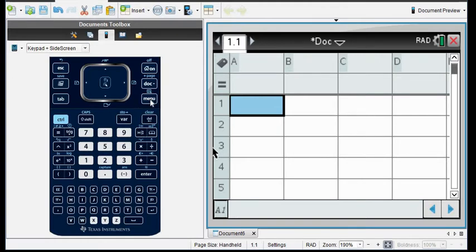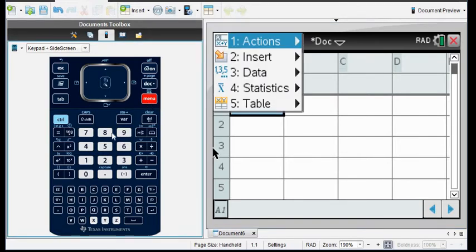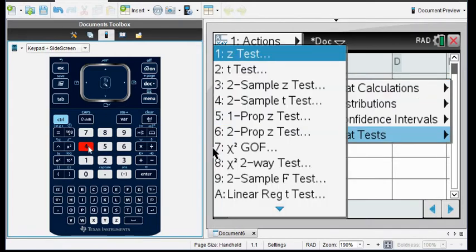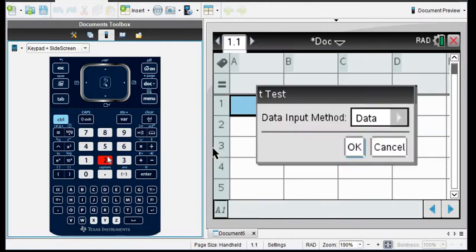if you have all of the data to put in a list, you could put it in here directly and then run the test. But in this case, we do not have all of the data. We have the stats. So I'm going to hit menu, option 4. And then I'm going to choose option 4 again. And for this one, we are going to do the t-test. You do need to know the name of the test that you are running.